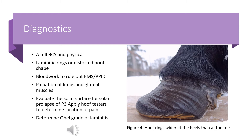Palpation of the limbs and gluteal muscles should be performed to exclude other reasons for lameness. If the horse is willing to lift its foot, evaluate the solar surface for solar prolapse of P3. Apply hoof testers to determine the location of pain, particularly around the toe. Finally, determine the Obel grade of laminitis, which provides a baseline measure and assists in determining the prognosis and progression of the disease.